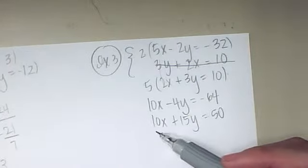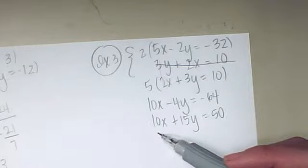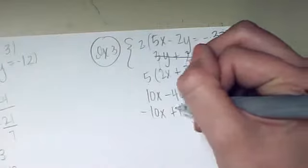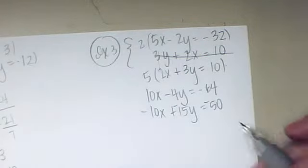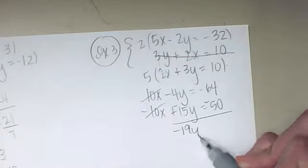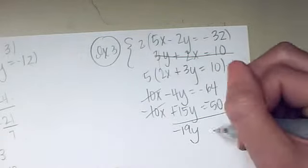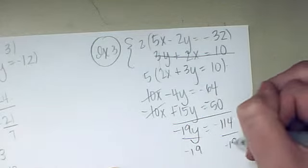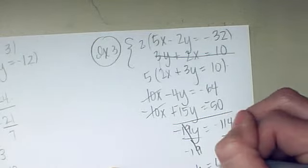These are both still 10x. So that's good. At least they're the same coefficient. The problem is there isn't one that's negative. So to do that, I'm going to flip all of my signs. Now these will cancel. Negative 4 and negative 15 is negative 19y. Negative 64 and negative 50 is negative 114. Divide both sides by negative 19. And then y is equal to 6.